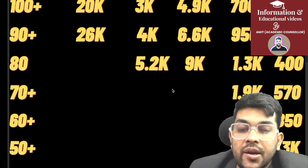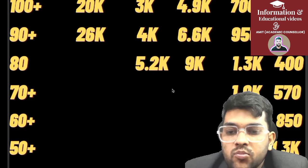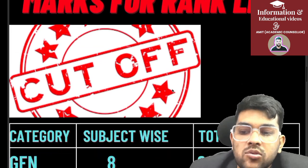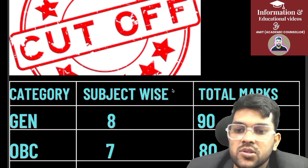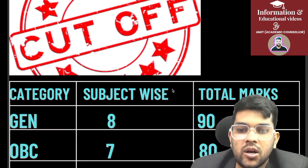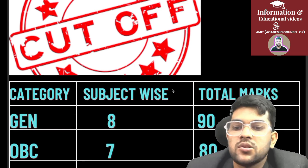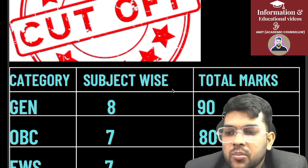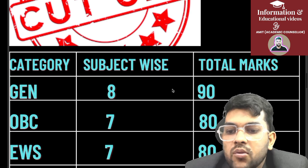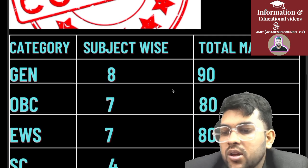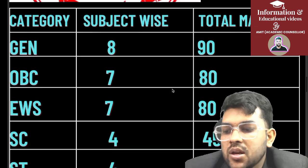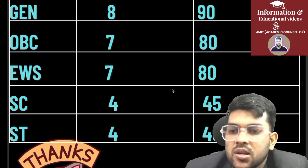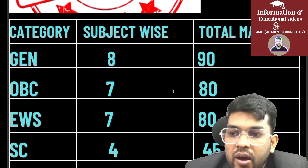For the rank list, minimum marks required subject-wise and total: General — 8 marks per subject, 90 total (my prediction; last year it was 86). OBC — 7 marks per subject, 80 total (last year 77). EWS — same as OBC, 7 per subject and 80 total. SC — 4 marks per subject, 45 total. ST — 4 marks per subject, 45 total.